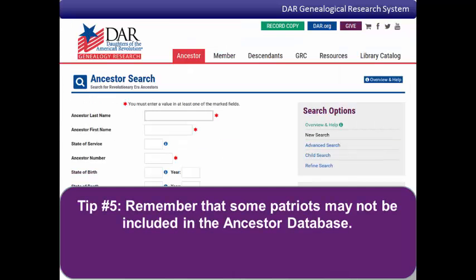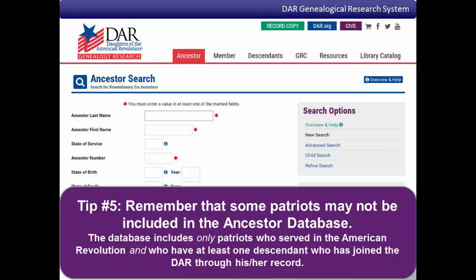Tip number five: remember that some patriots may not be included in the ancestor database. If you try all of these search strategies and you still don't get results, remember the limitations of the ancestor database. The database only includes records for patriots who served in the American Revolution and who have at least one descendant who has joined the DAR through his or her record.